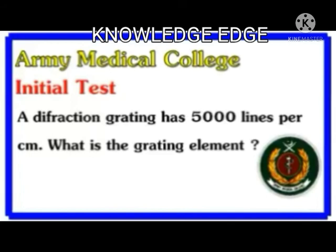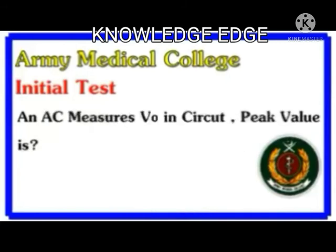A diffraction grating has 5000 lines per centimeter. What is the grating element? The answer is 2 multiplied by 10 to the power minus 4. Another question asks: if a diffraction grating has 500 lines per centimeter, then what is the grating element?